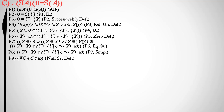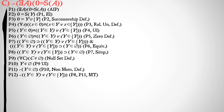By the null set definition, there isn't anything that is a member of the null set: for all C, C is not a member of the null set. We universally instantiate Y for C, then use the non-member definition to rewrite that as the negation of 'Y is a member of the null set.' We've denied the consequent of our conditional in premise 8, so we use modus tollens to deny the antecedent: it's not the case that Y is a member of Y or Y is a member of the set of Y.